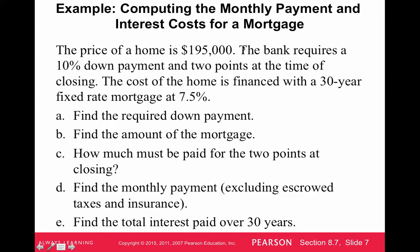Let's go through an example. The price of a home is $195,000. The bank requires a 10% down payment and two points at closing. So to get this loan and move into your house, you must pay 10% of the selling price plus two points on whatever you borrow. The cost is financed with a 30-year fixed-rate mortgage at 7.5%, which is astronomically high compared to today's rates of around 4%.